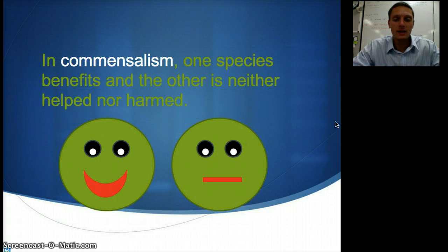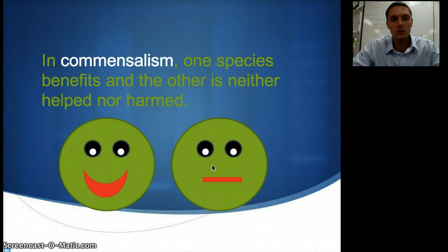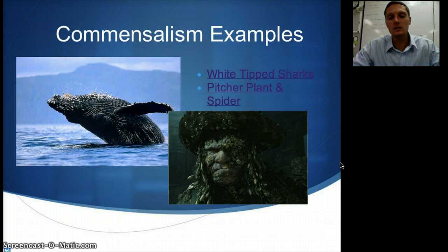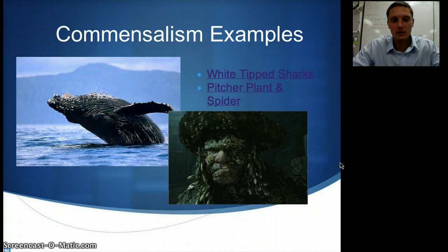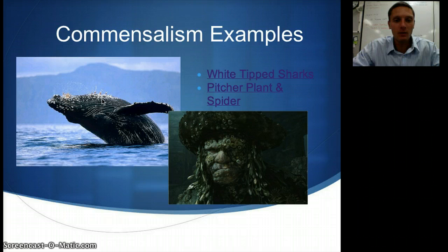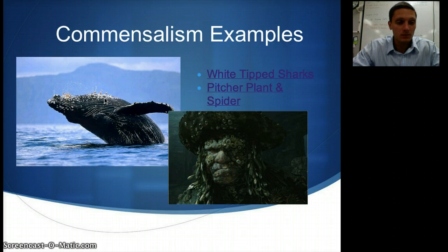The last type is commensalism. In this type of symbiosis, one species benefits and the other is neither helped nor harmed — one species is happy, the other is just kind of indifferent. This blue whale here has barnacles living on it. We don't think the barnacles help or harm the whale in any way. But the barnacles, by living on the whale, are definitely benefited — normally they're not a mobile species, but by living on the whale they're able to move around and filter feed in different areas where the whale feeds. So we think this is an example of commensalism.